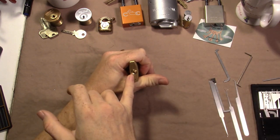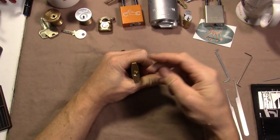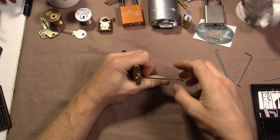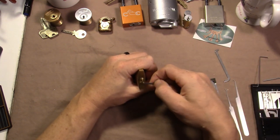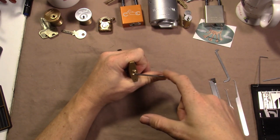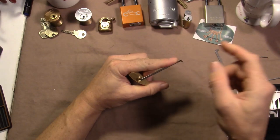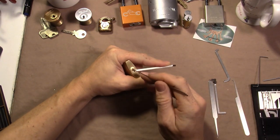When I see one like this, kind of a Master Lock style, I usually just think about going straight to bottom of the keyway, find one that does not bind the core, and I'm going to start with my short hook.